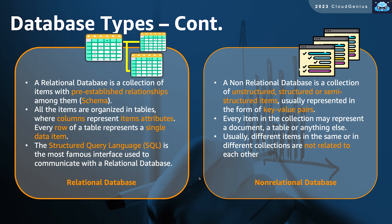Every row represents a single data item or record, and every column represents an attribute for data items. We use structured query language to communicate with relational databases — to query and search for records, or even write new transactions or update existing records. On the other hand, non-relational databases are actually a collection of unstructured, structured, or even semi-structured data.